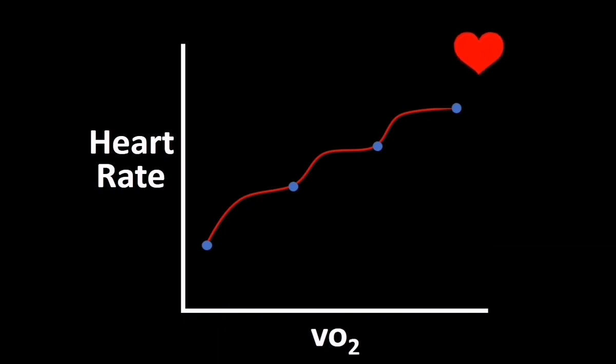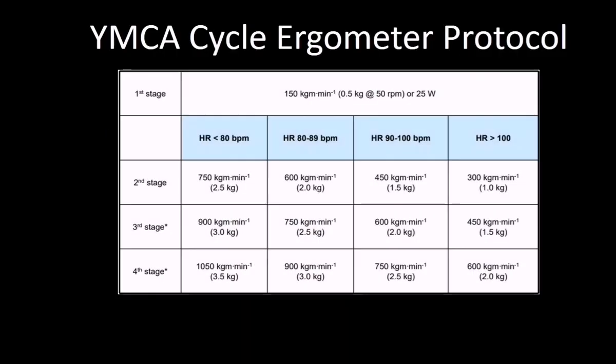Using a stationary Monarch bike, the YMCA protocol involves two to four three-minute stages of continuous cycling exercise where the individual will experience a progressive increase in exercise intensity while maintaining a steady pedaling frequency of 50 rotations per minute. The test is stopped at stage 4 or if the person reaches 85 percent of their age-predicted maximal heart rate.